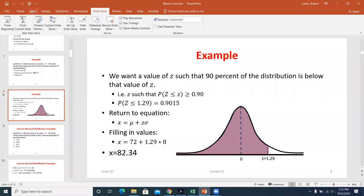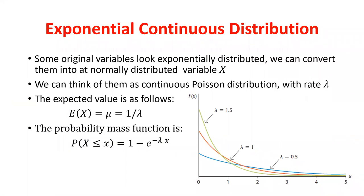Now we tackle something more difficult: two other continuous distributions that aren't normal. The first is exponential. An exponential distribution looks like the most right-skewed you could make a normal distribution — values don't go below zero, but there's an infinite tail to the right. It's still continuous because we can see any value between integers. Unlike the normal, the exponential is defined only by lambda, similar to the Poisson but for continuous variables.